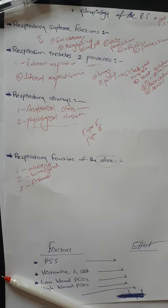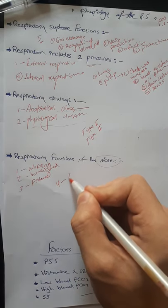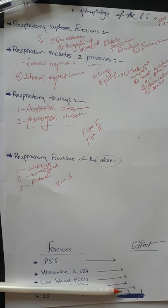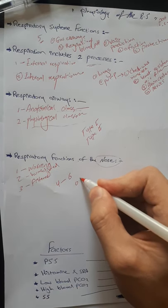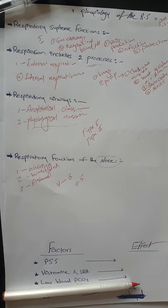All remaining particles of smaller size settle out in the smaller bronchioles as a result of gravitational precipitation. Some particles smaller than 1 micron in diameter diffuse against the walls of the alveoli and adhere to the alveolar fluid. However, many particles smaller than 0.5 microns in diameter remain suspended in the alveolar air and are later expelled by expiration.